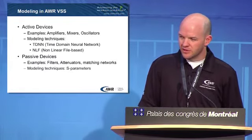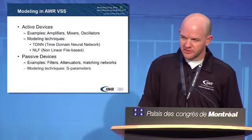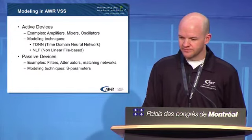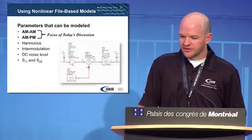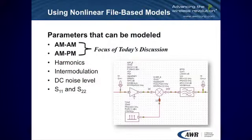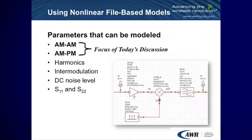There are also passive devices, which typically aren't as much of a problem because you can just use S-parameters, but it's still something to consider. The focus of our discussion today is going to be on making models for amplifiers, using measurements from hardware plugged directly into the system simulator. What we're going to show today focuses on AM to AM and AM to PM modeling, but it could definitely be expanded to include harmonics, distortion, noise levels, and impedance mismatch.